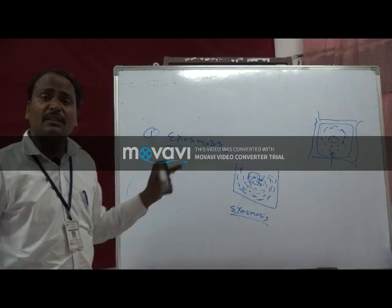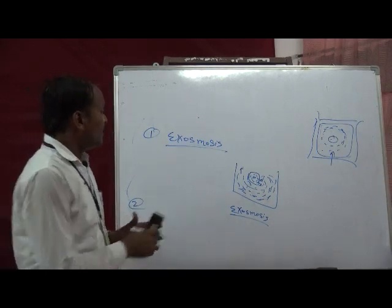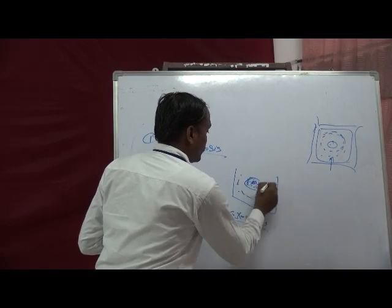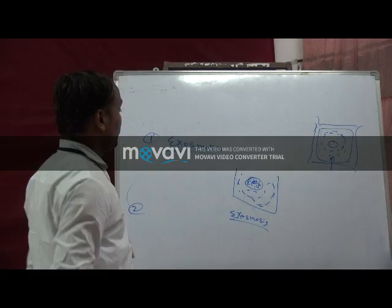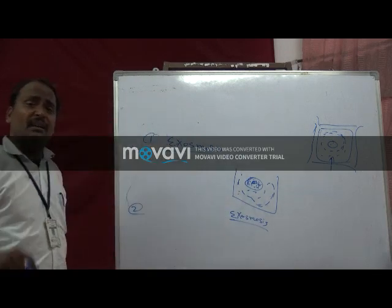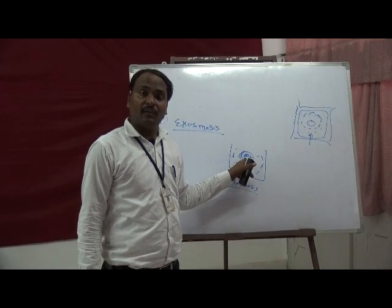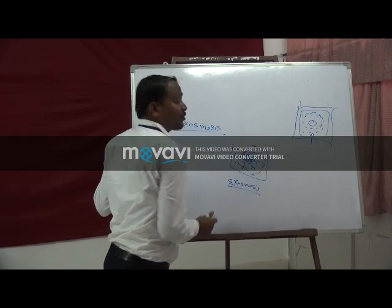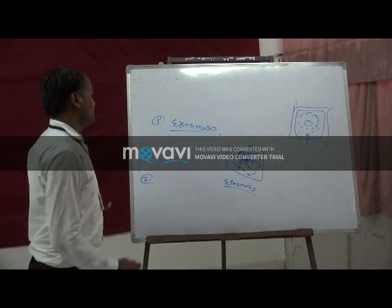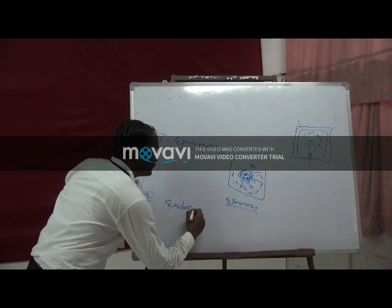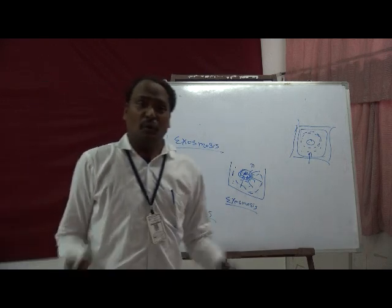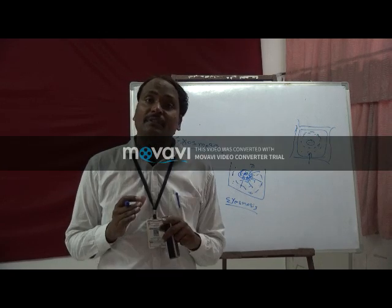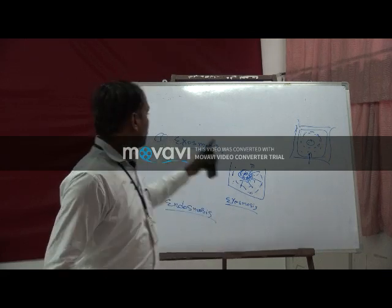The second type of osmosis is endosmosis, and it is exactly opposite to exoosmosis. When the cell is surrounded by a hypotonic solution, the concentration and osmotic pressure of the cell is more. So at that time, water molecules from the surrounding enter into the cell — such type of osmosis is called endosmosis.